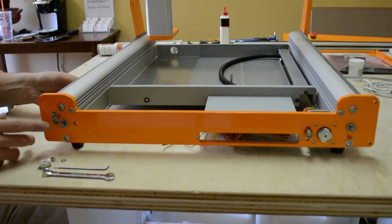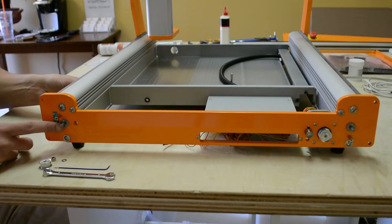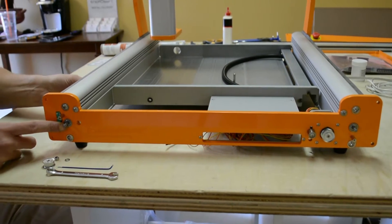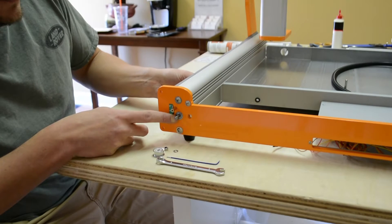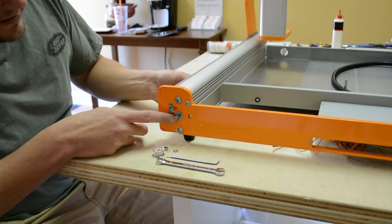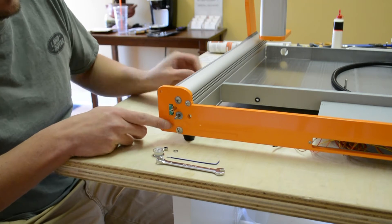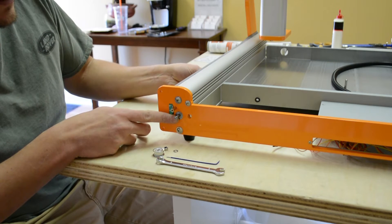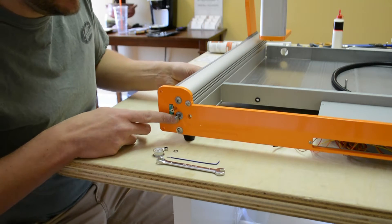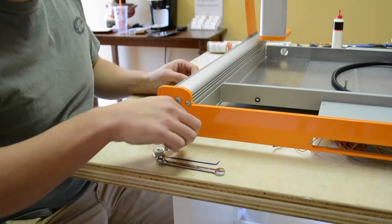First thing I'm going to do is thread in the lead screw the rest of the way, and you're going to get to a point where it stops where it's bottomed out on the bearing. In this case, I have to turn it a little further because the flat spot on the lead screw is not in the right spot, so I'm just going to keep turning it so that I can get it on.